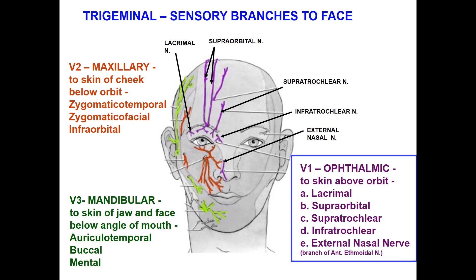The maxillary division is for the skin of the cheek below the orbit. It has the zygomaticotemporal nerve, zygomaticofacial nerve, and infraorbital nerve. The ophthalmic division covers the skin above the orbit via lacrimal, supraorbital, supratrochlear, infratrochlear, and external nasal branches. The maxillary division covers the skin of the cheek below the orbit through the zygomaticotemporal, zygomaticofacial, and infraorbital nerves. The mandibular division covers the skin of the jaw and face below the angle of the mouth via the auriculotemporal, buccal, and mental nerves.